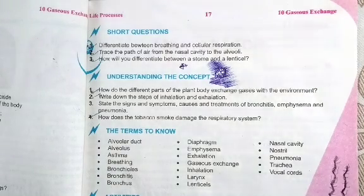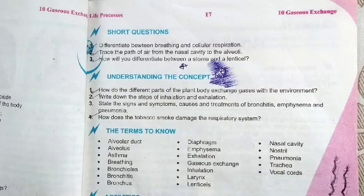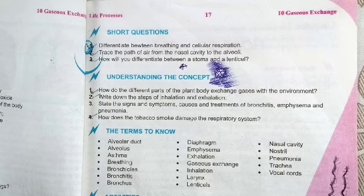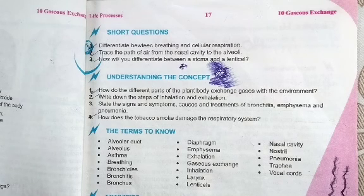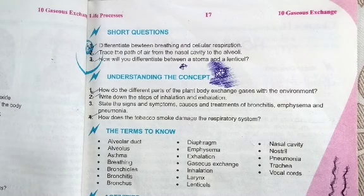Question number one, according to the smart syllabus: differentiate between breathing and cellular respiration. Breathing is a process in which we take in air; it is a mechanical and physical process. On the other hand, cellular respiration is a process in which oxygen is required for the production of ATP, because ATP is needed to perform cellular activities utilized in biochemical reactions. It is also known as a biochemical process.